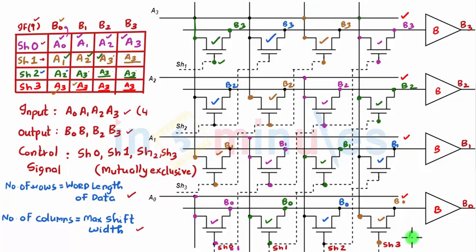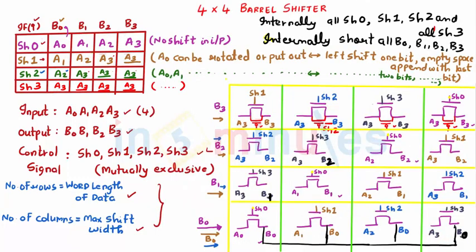And this is nothing but my 4x4 barrel shifter — very straightforward. If you find it a bit confusing, use a simpler example and remember to internally short everything. For transmission gates, just connect a PMOS in parallel to the NMOS and give it the input opposite to what you've given the NMOS. With that, I complete the barrel shifter topic. Hope you have followed. Stay tuned, and thank you very much — it was a pleasure teaching you this.